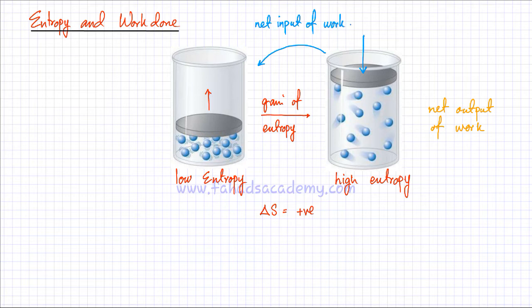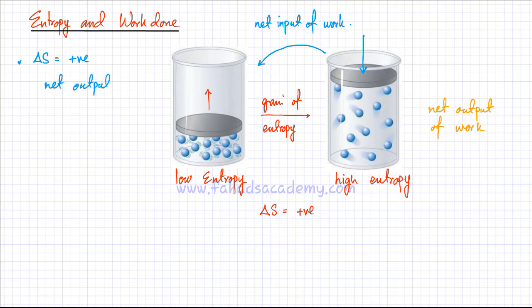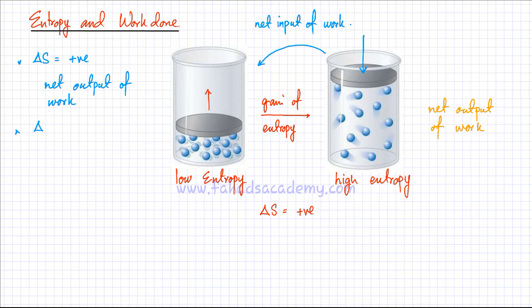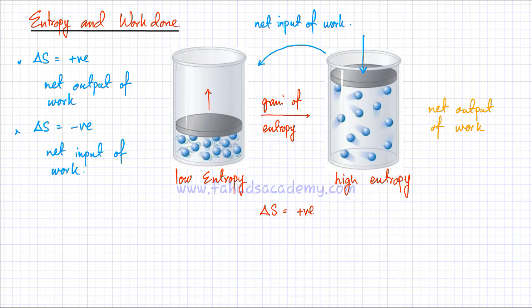To sum this up: if delta S is positive, that means entropy is being gained and there's going to be a net output of work — the system would produce energy. Vice versa, if delta S is negative, that would indicate there is a net input of work and energy would be taken in by the system.